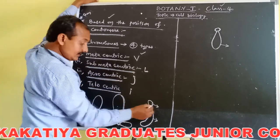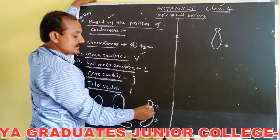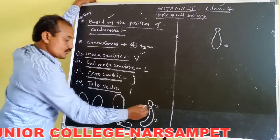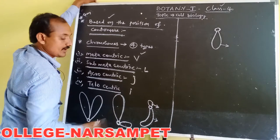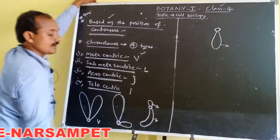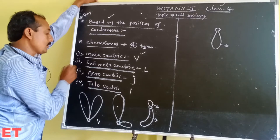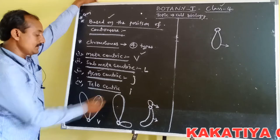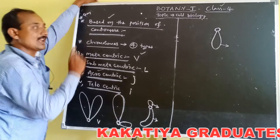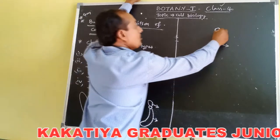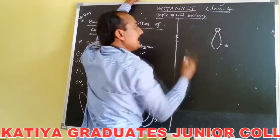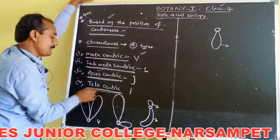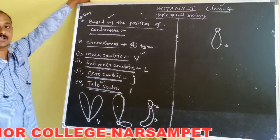Acrocentric means it consists of two unequal arms, centromere is present at one end of the chromosome — one is a very short arm and another is a very long arm — and they appear J-shaped. Telocentric means it consists of a single chromatid, centromere is present at the top of the chromatid, and they appear I-shaped.